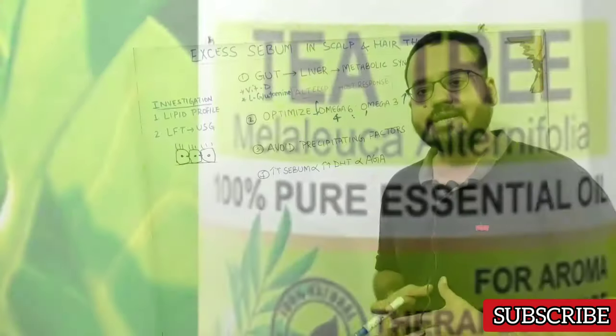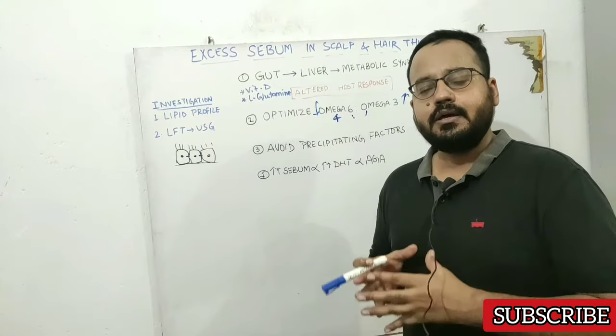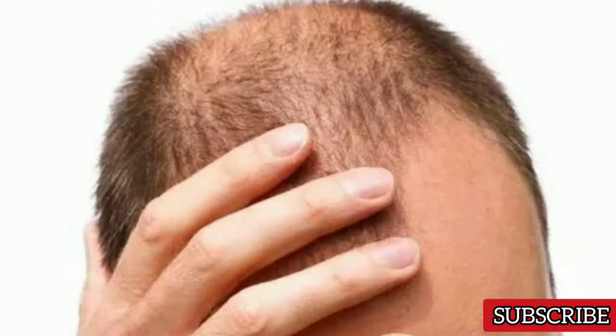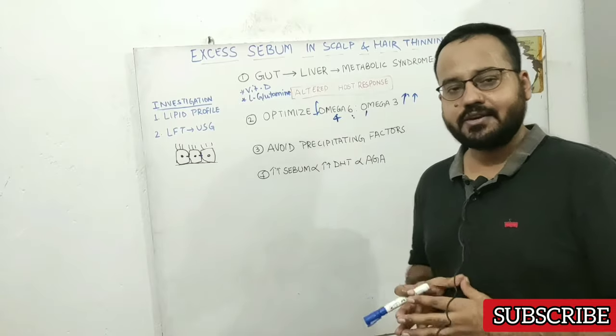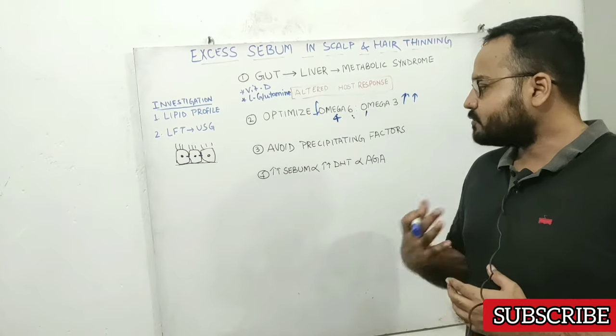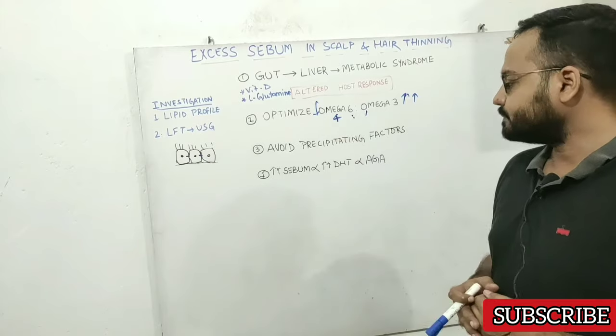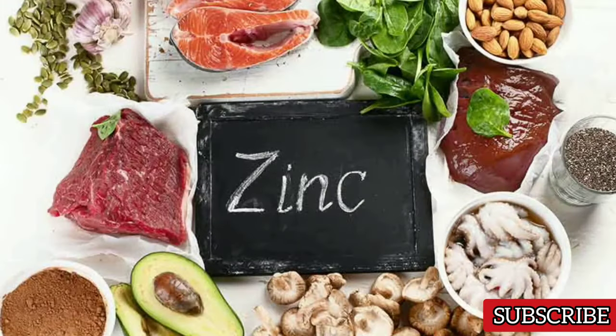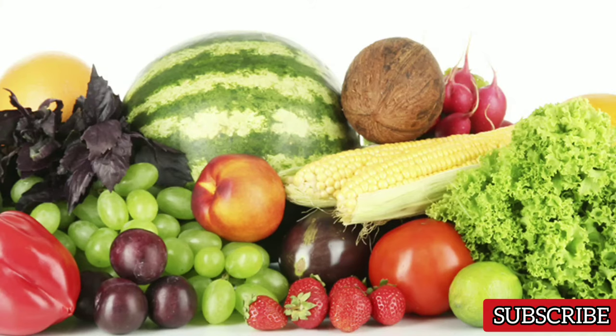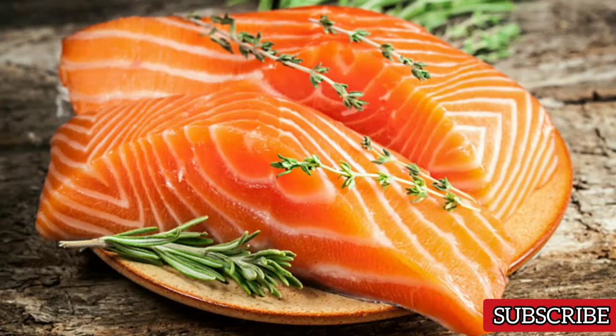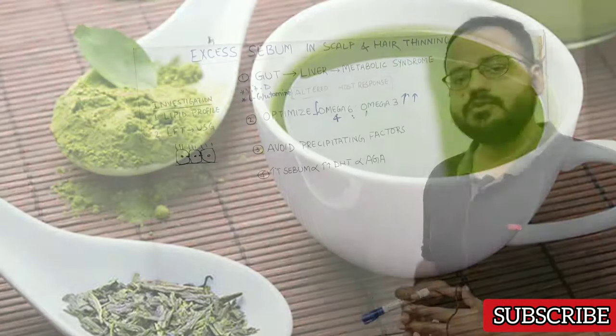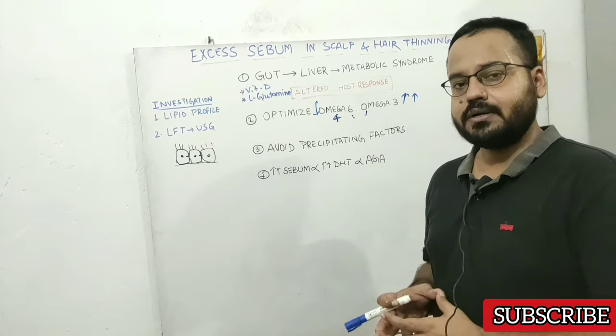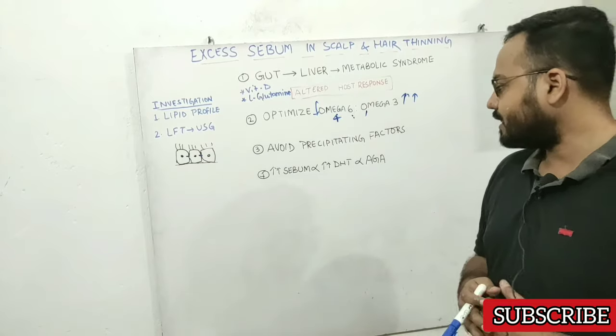If you have excess sebum in scalp, you likely have high DHT, which increases the likelihood of male pattern baldness. Although this is just an observation, be extra careful. Assume you have high DHT if you have excess sebum, and take natural DHT blockers like zinc, lycopene-rich foods, healthy fats from walnuts, omega-3 rich foods, and green tea.